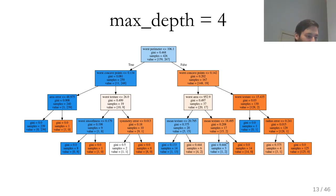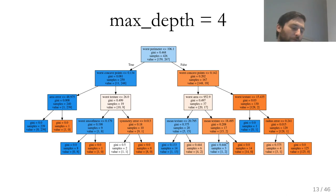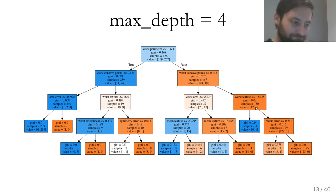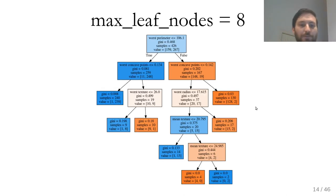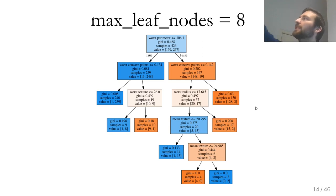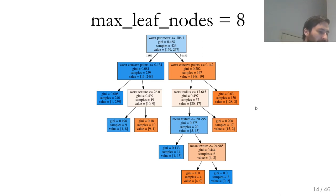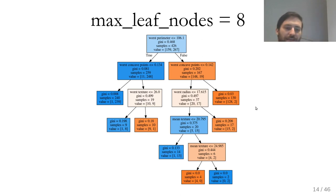Setting max_depth=4 gives a shallower, wider tree with less complexity, though some subtrees still seem unnecessarily complex. Setting max_leaf_nodes=8 — which I actually prefer — does a best-first split, always splitting where impurity decreases most. This gives a slightly deeper but not very wide tree with only 8 leaf nodes, which is a natural way to measure tree complexity: you have 8 distinct regions over which you make decisions.